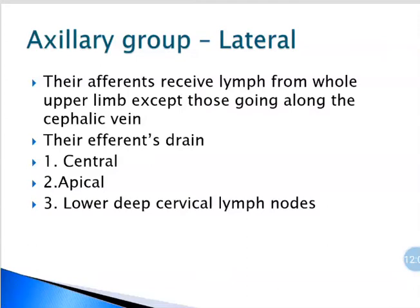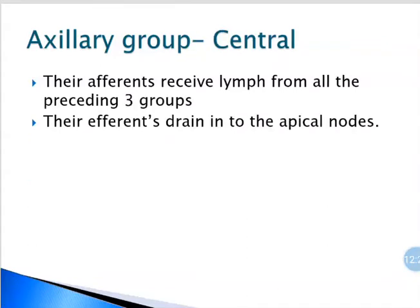For the lateral group, the efferents receive lymph from the core of the limb, except those running along the cephalic vein. Their efferents drain not only to the central group and apical group, but also into the lower deep cervical lymph nodes. For the central group, their afferents receive lymph from all the preceding groups — that is anterior, posterior and lateral groups — and they are located in the base of the axilla. Their efferents drain into the apical lymph nodes.